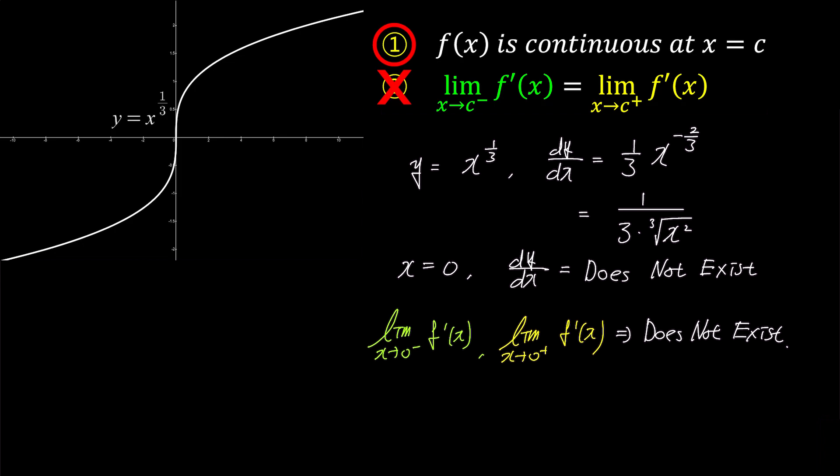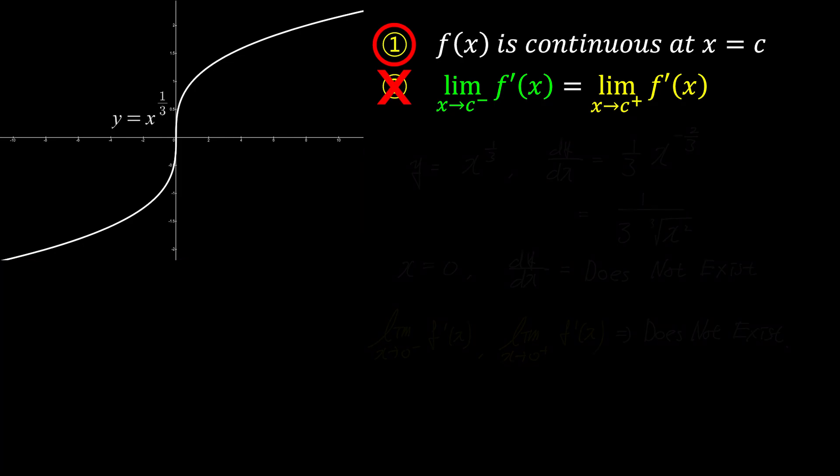As mentioned earlier, this graph has a vertical line at x equals 0. Just like in the equation of a straight line, we cannot determine the slope of a vertical line. Therefore, for a function to be differentiable, it should not have any vertical lines.